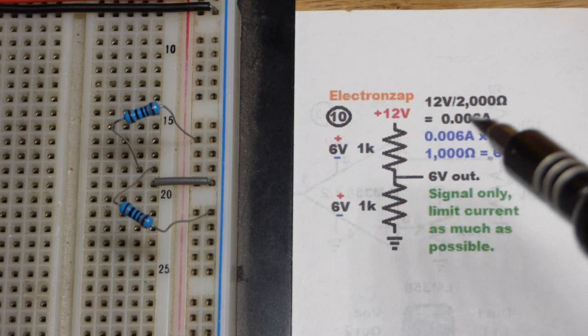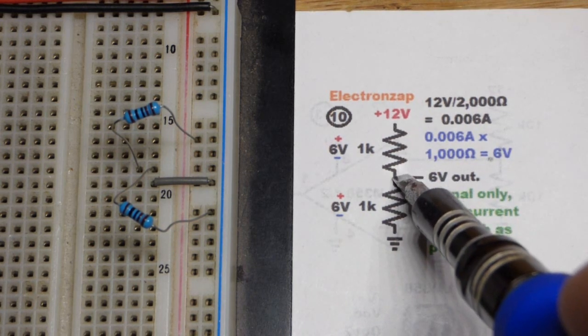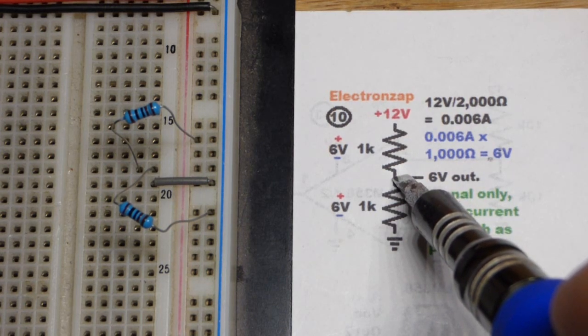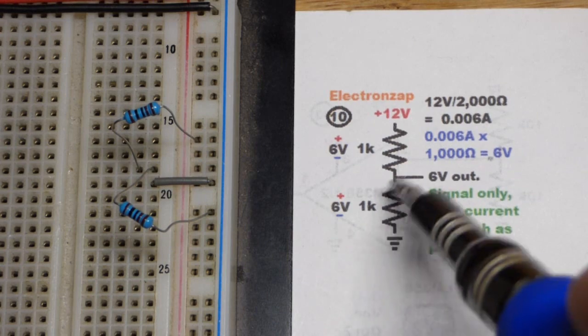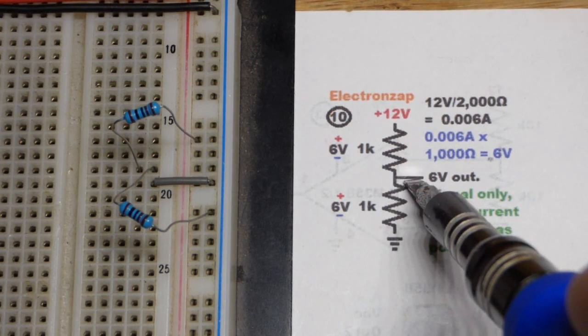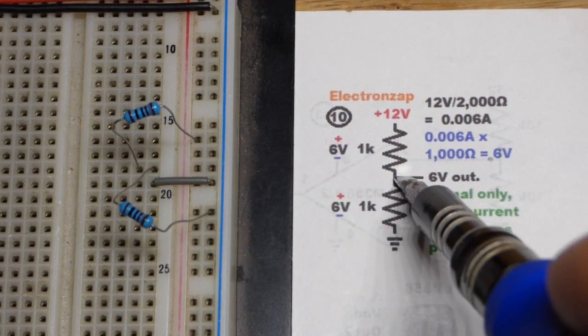There's also a trim pot, which is a variable form of this, but we're not going to get into that potentiometer. Same thing as a trim pot. In any case, we got 12 volts across these two resistors, and we're interested in this point where they connect. You get a fraction of the voltage.